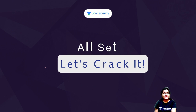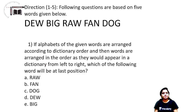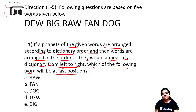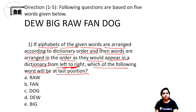Let's crack it and start the session. First question: if the alphabets of the given words are arranged according to dictionary order within the word, and then the words are arranged in the order as they would appear in a dictionary from left to right, which of the following words will be at the last position?